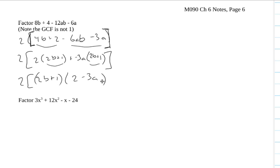So the only thing that I would want to do to finish this up, I'm going to get rid of these brackets because they're actually not doing anything. 2 times 2b plus 1 times 2 minus 3a. The brackets are saying I have to do this multiplication before I do that multiplication. But the associative property says you can just drop them. So that's what I'm doing.